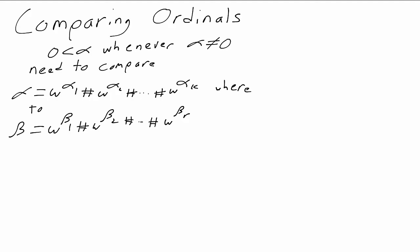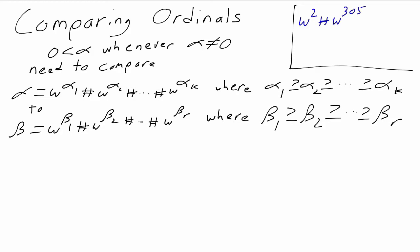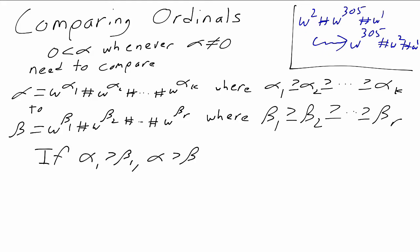We follow a convention: when we write an ordinal as a sum of exponential terms, we always write the terms from biggest to smallest, so alpha one ≥ alpha two ≥ alpha three and so on, and similarly for the beta i. For example, we wouldn't write omega squared plus omega to the 305 plus omega; we'd rewrite it as omega to the 305 plus omega squared plus omega. We need 'greater than or equal' because repeated terms are allowed — two is one plus one, which is omega to the zero plus omega to the zero, and that's fine since zero ≥ zero.